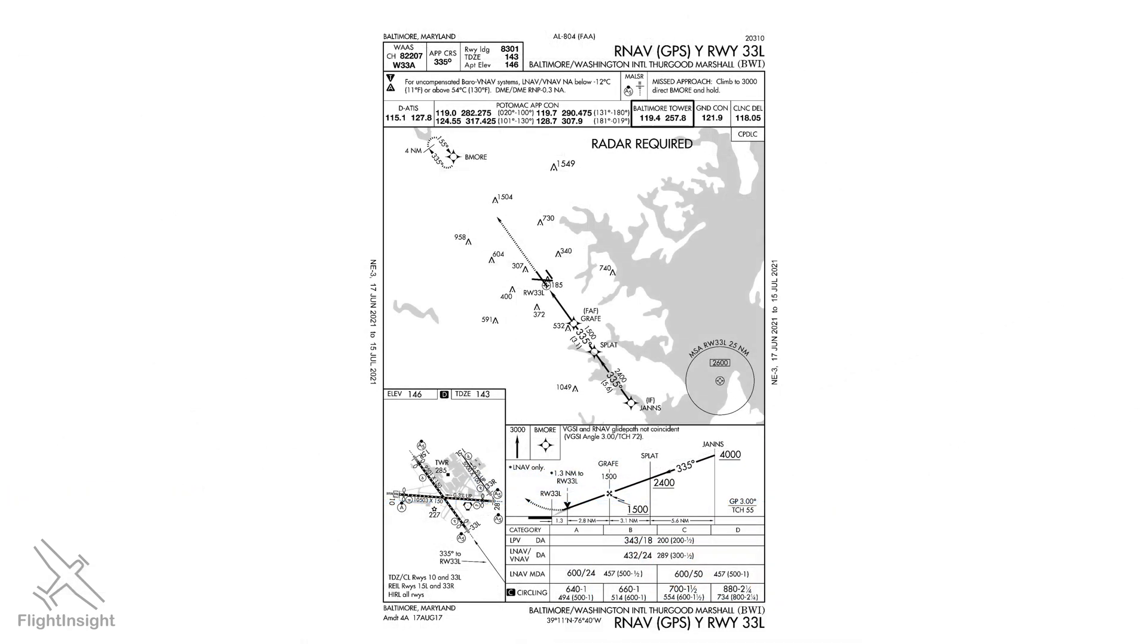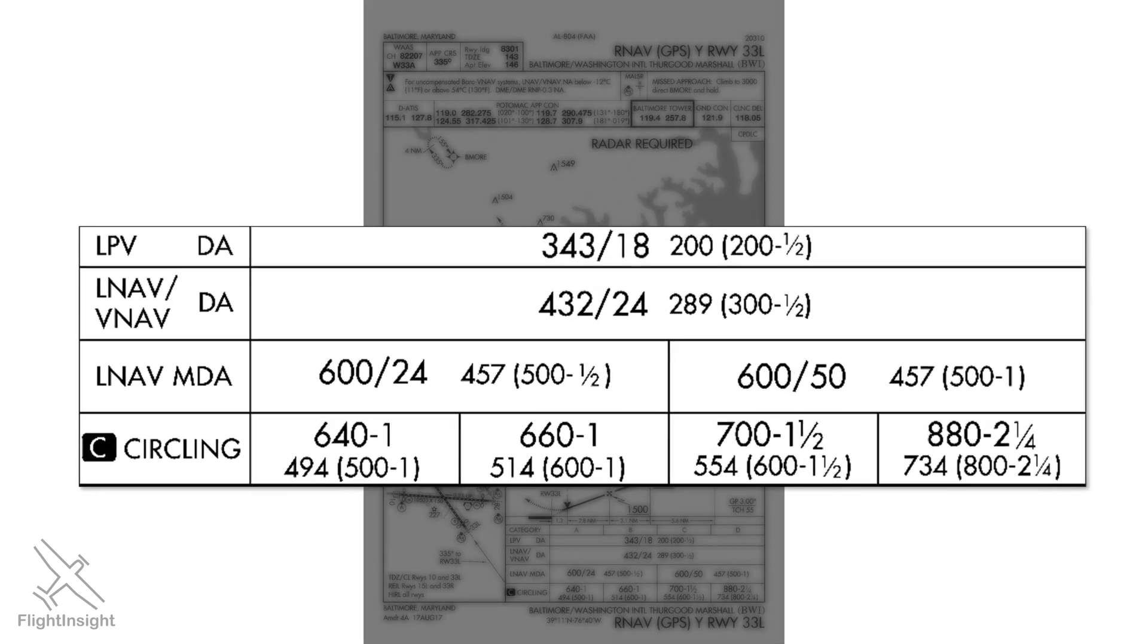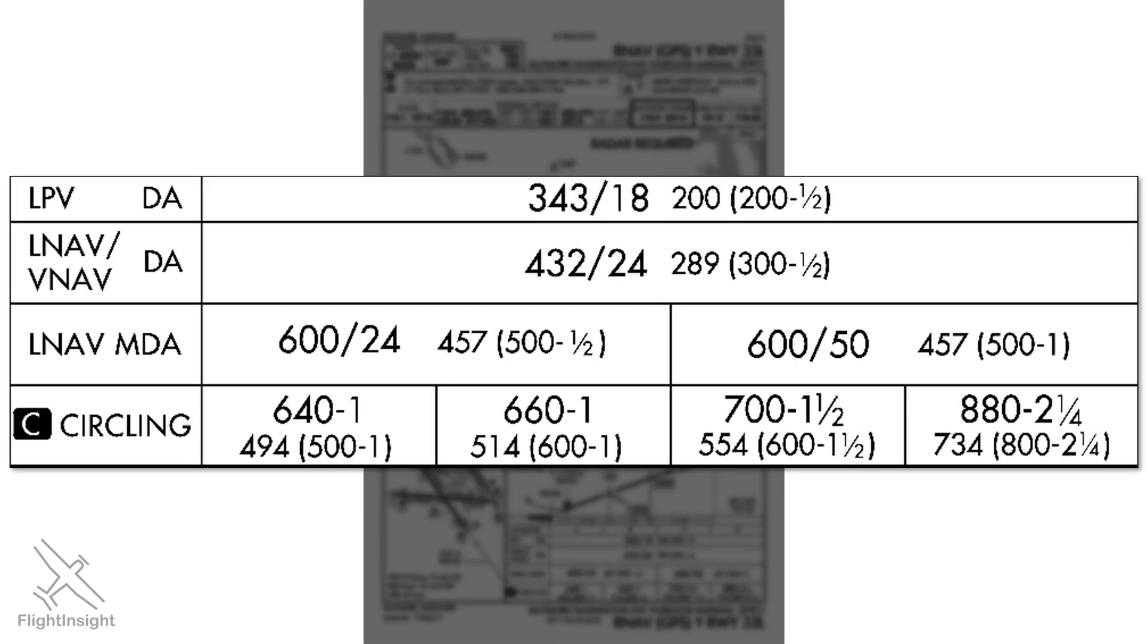Make sure you're incorporating this brief on an RNAV approach as well. On an ILS or LOC, it's fairly easy to tell whether you're flying to a DA or an MDA. On a GPS approach, you'll need to know what kind of guidance you're flying. This approach lists different minimums based on different approach guidance. The LPV and LNAV/VNAV approaches use vertical guidance, so they give decision altitudes of 343 feet and 432 feet. The LNAV approach uses only lateral navigation, so it gives an MDA of 600 feet.